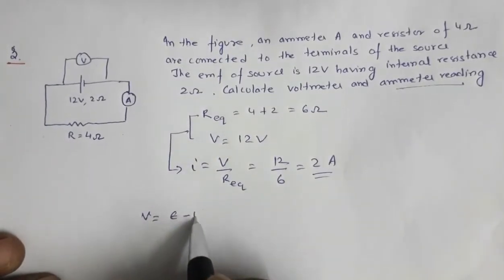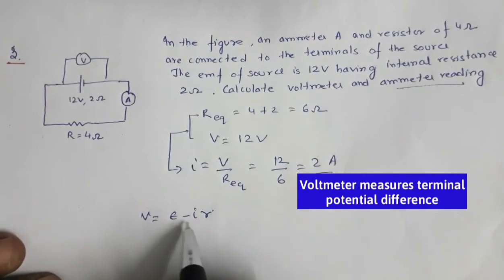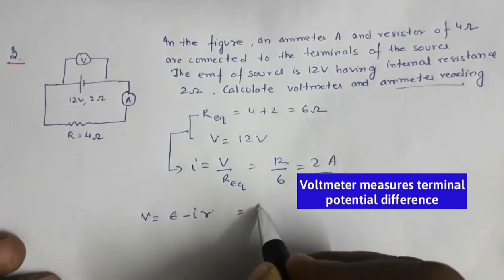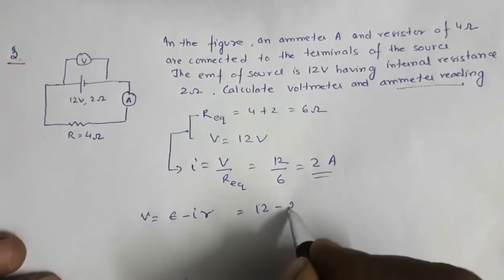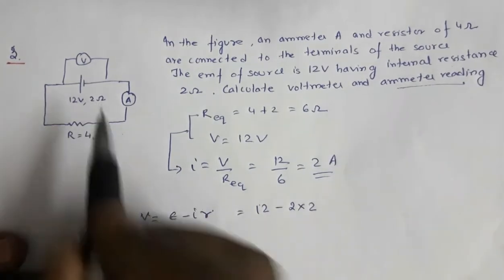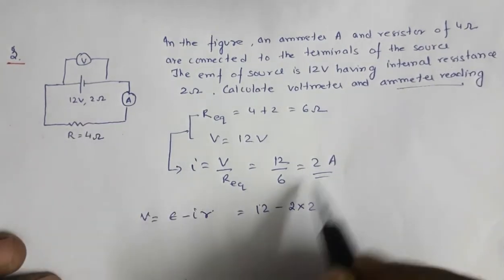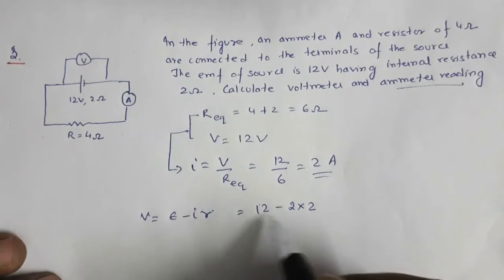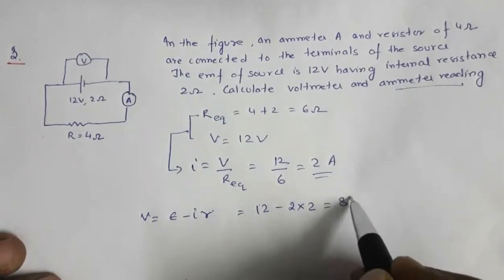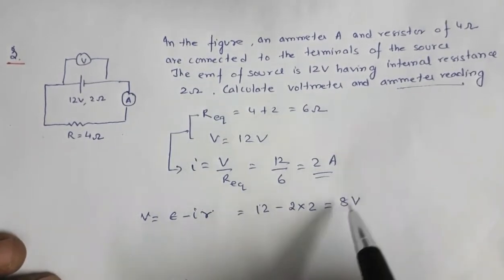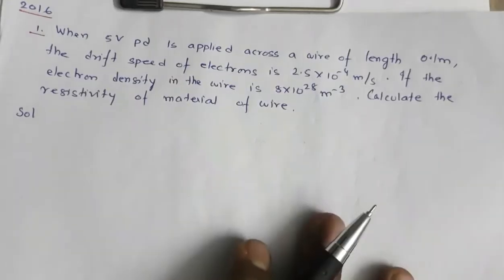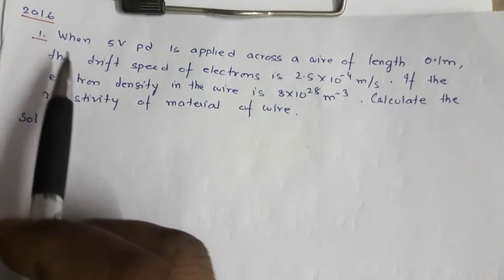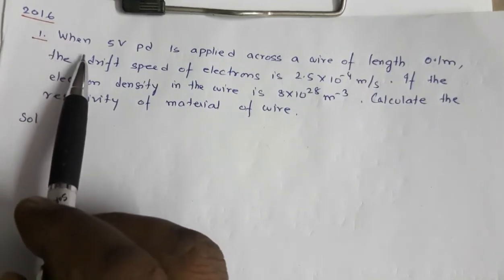For the voltmeter reading, using the formula V = E - Ir, where E = 12 volt, I = 2 ampere, and r = 2 ohm (internal resistance): V = 12 - (2 × 2) = 12 - 4 = 8 volt. So the voltmeter reading is 8 volt.